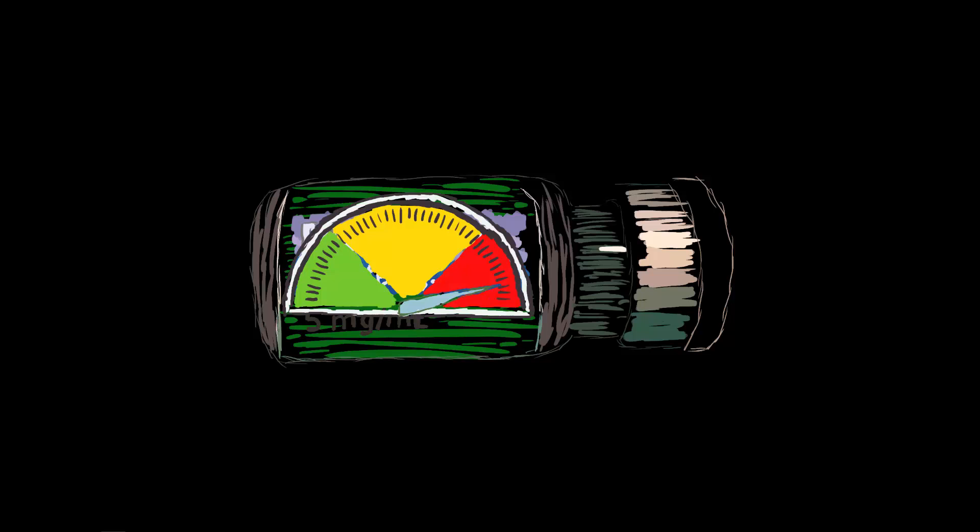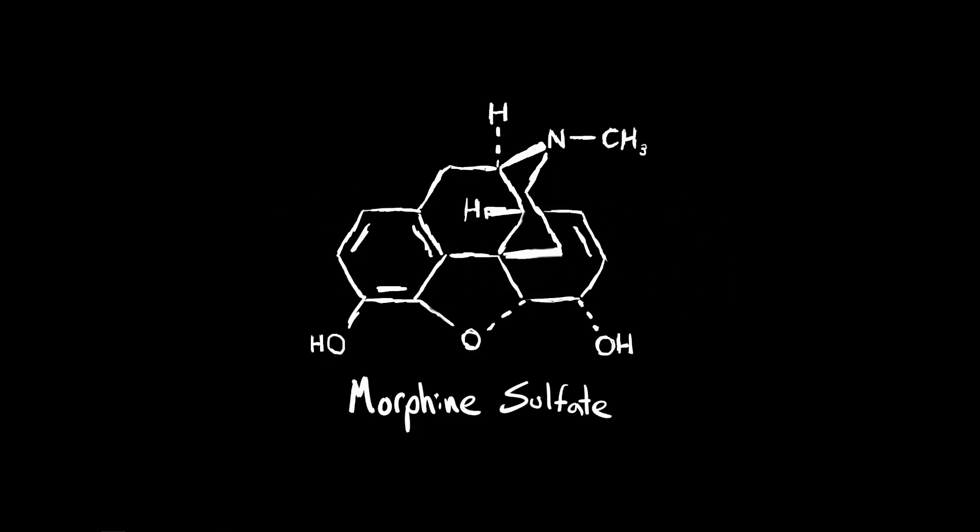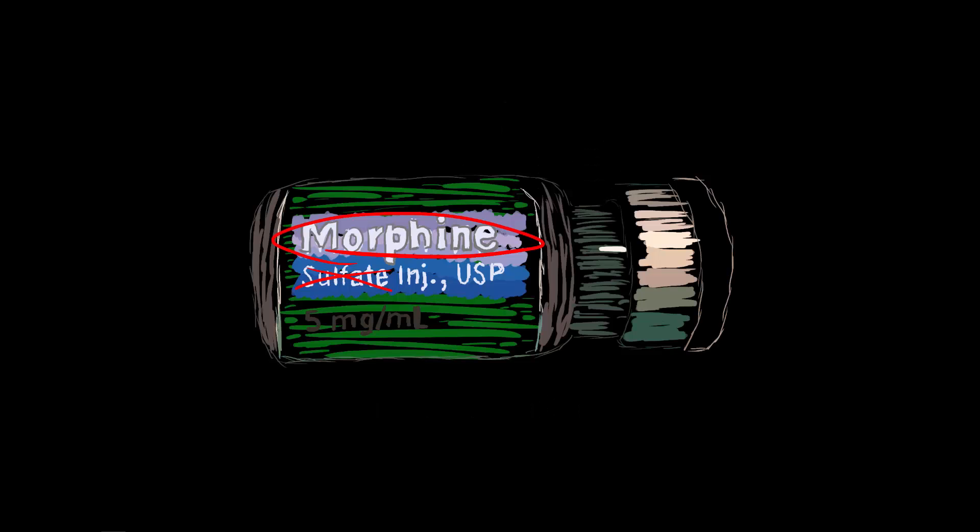Morphine, the benchmark opiate. Chemical name morphine sulfate, often sold just under the plain name morphine, it's a medication of the analgesic class.